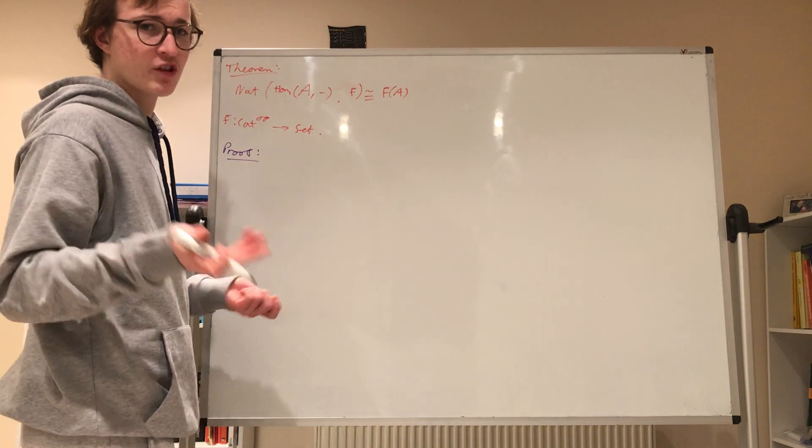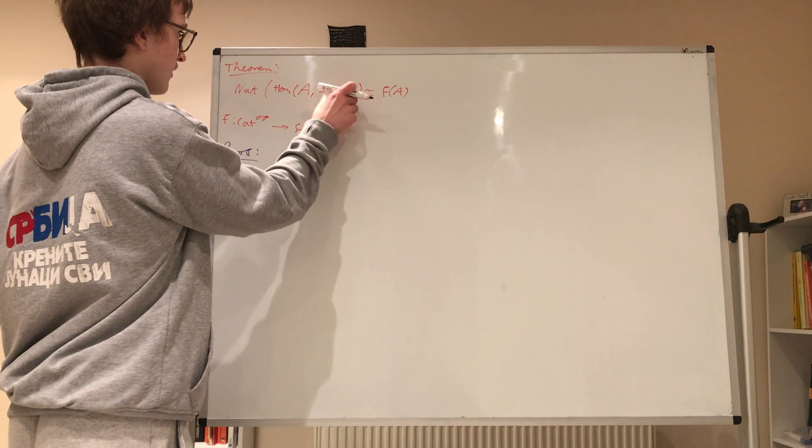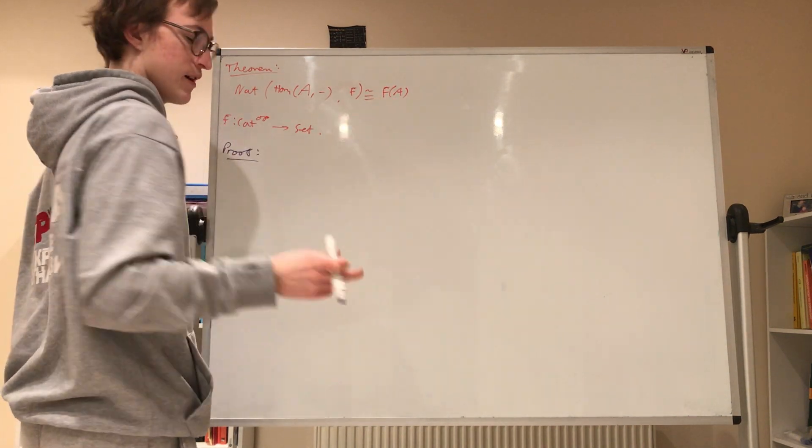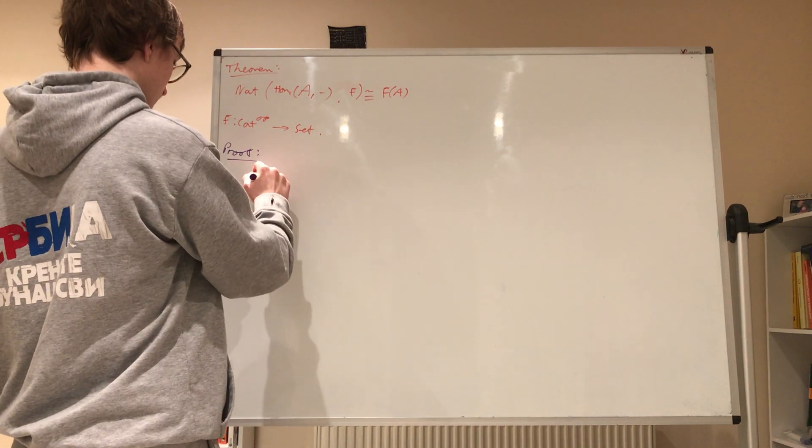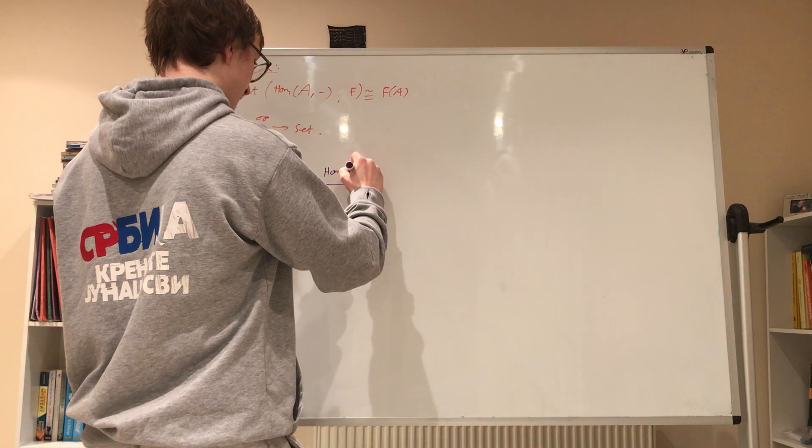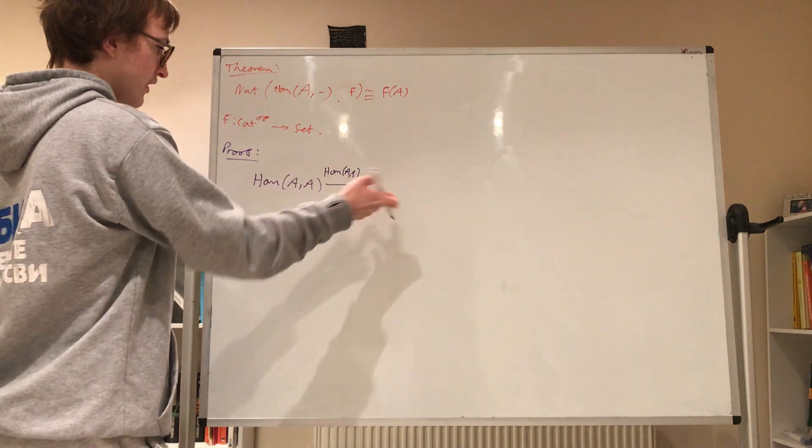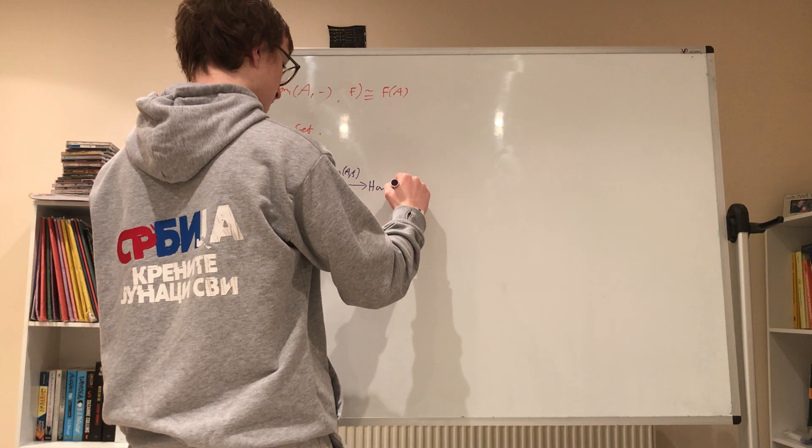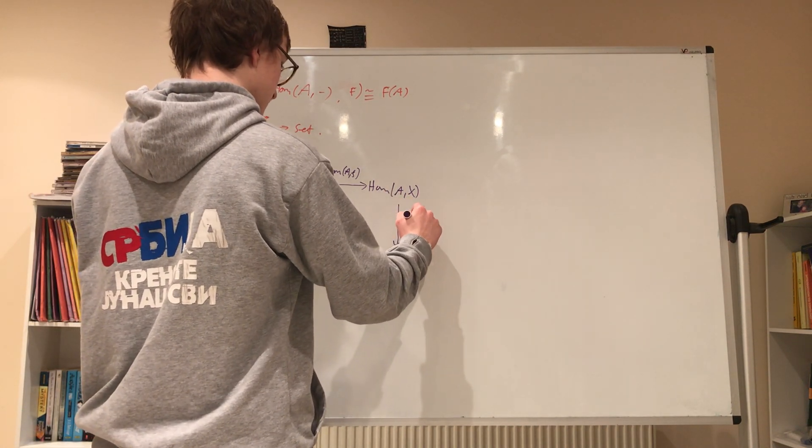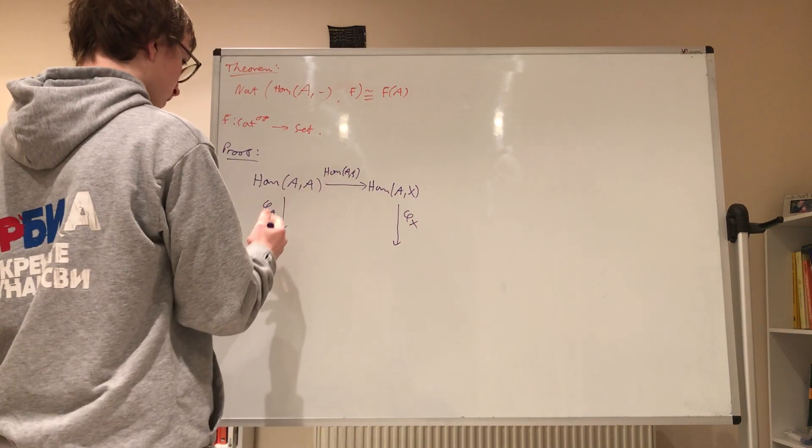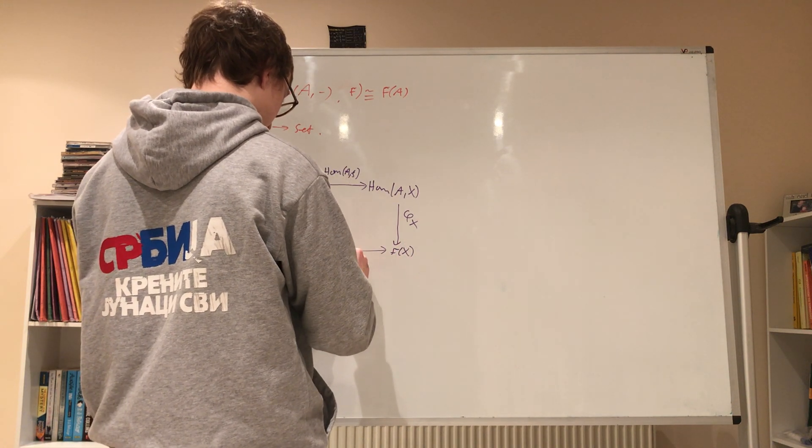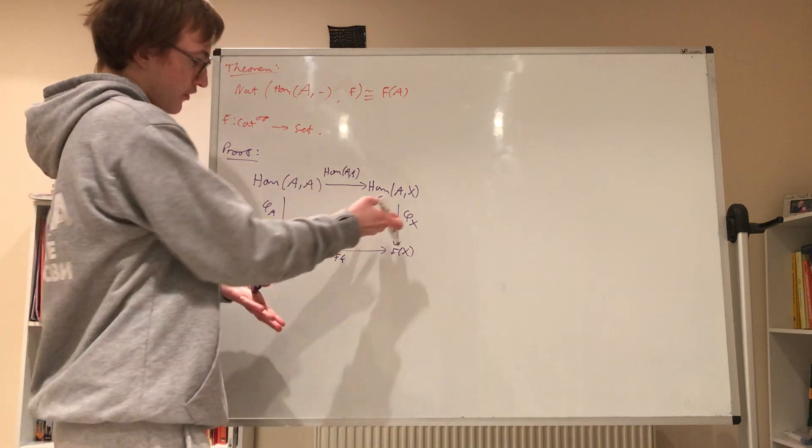Now, we're just going to pick some natural transformation phi between Hom_A and F. So, phi is given by, is uniquely determined by an element of F of A, as I will show now. So, consider Hom_A(A). Now, this goes via Hom_A(F), for some F from A to X, to Hom_A(X). Now, these maps will go down via our natural transformation. So, via phi_X, and this one will go via phi_A, down to F of A, and this will go to F of X, via F(F). And so because this is a natural transformation, this commutes.